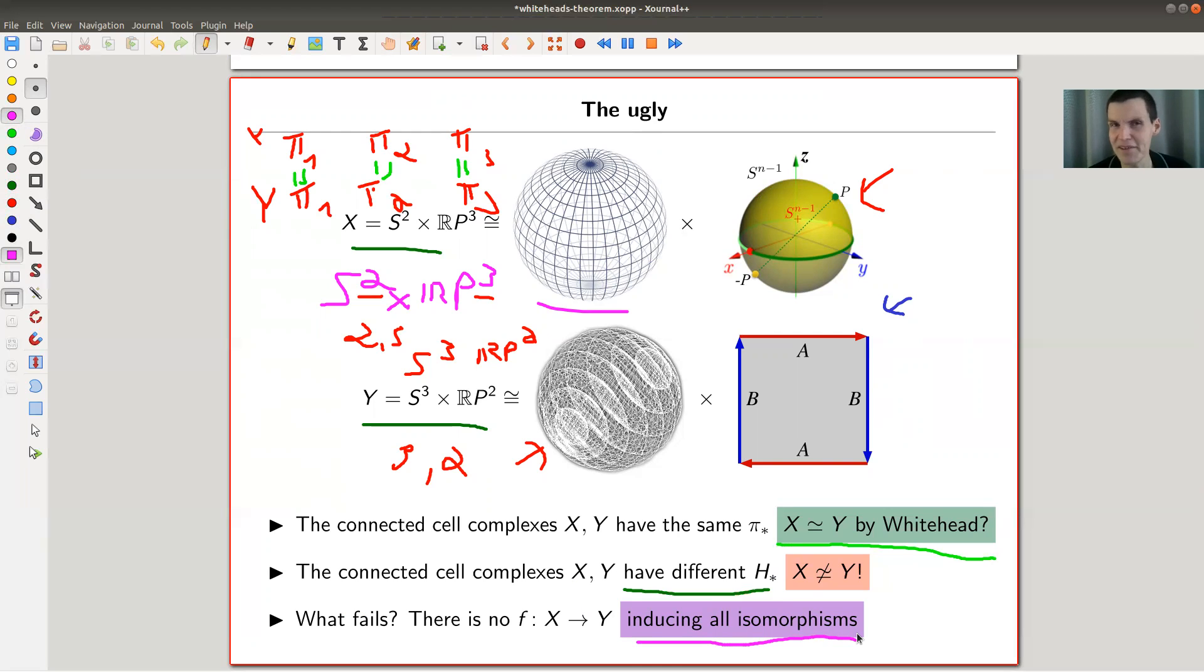So the ugly, it's actually a pretty beautiful example, sorry little example that got called ugly. Pretty beautiful example, it's telling you, you have to be careful, it's not quite that Whitehead's theorem tells you that spaces are homotopy equivalent, if and only if their homotopy groups are isomorphic. Nope, they kind of have to be isomorphic in a coherent way, right, so they have to be isomorphic in a nice coherent way.